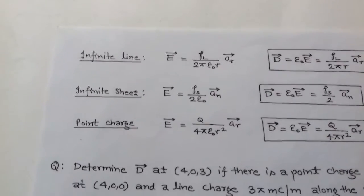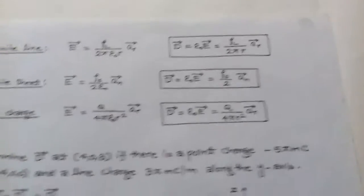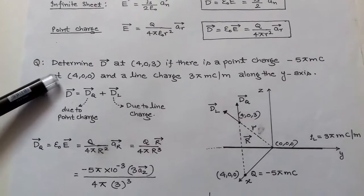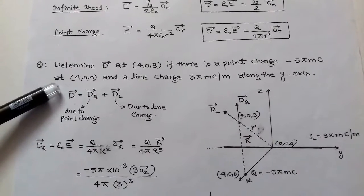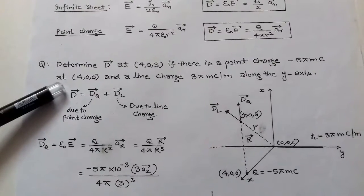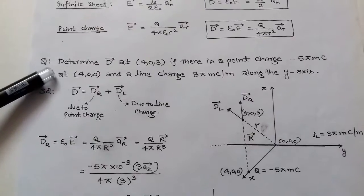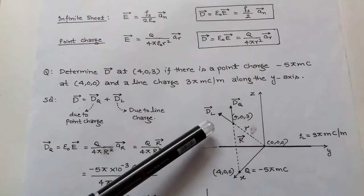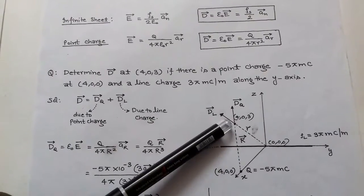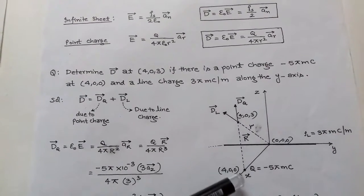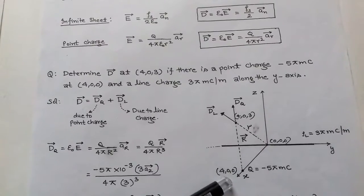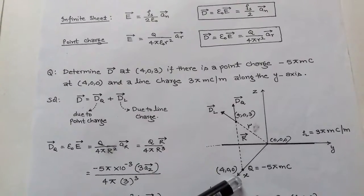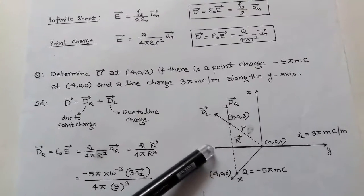You should remember these formulas for the numerical part. Now we take a numerical example: Determine vector D at coordinate (4,0,3) if there is a point charge −5π mC at coordinate (4,0,0) and a line charge 3π mC/m along the y-axis. The point charge −5π mC is at (4,0,0), meaning it lies on the x-axis.